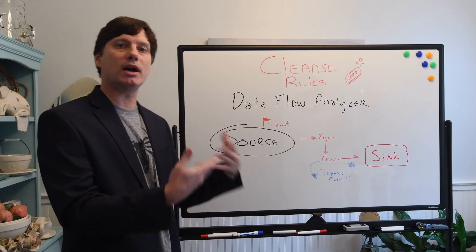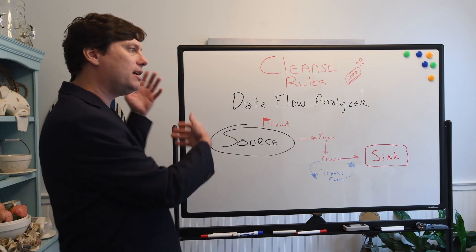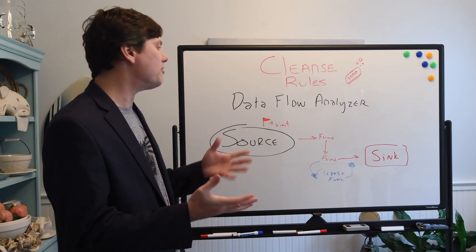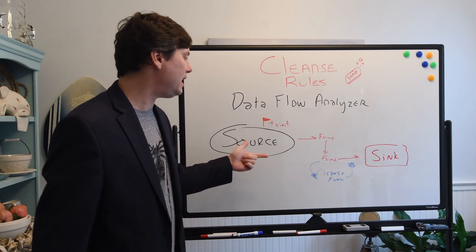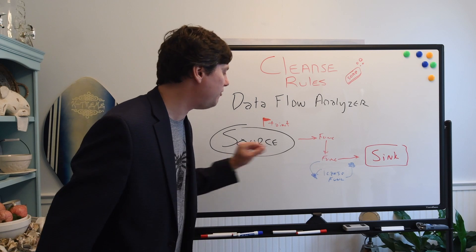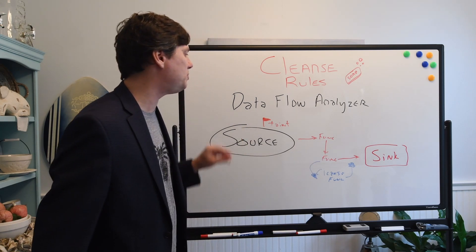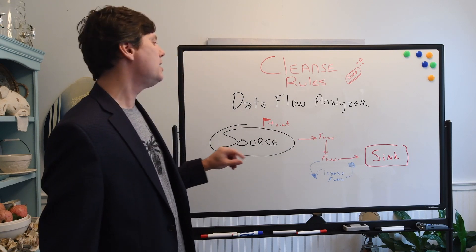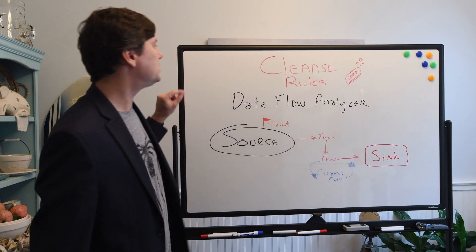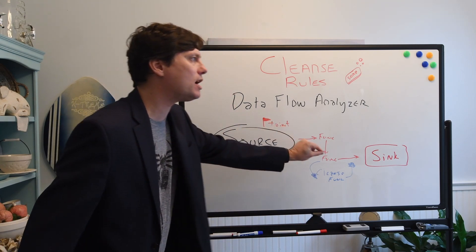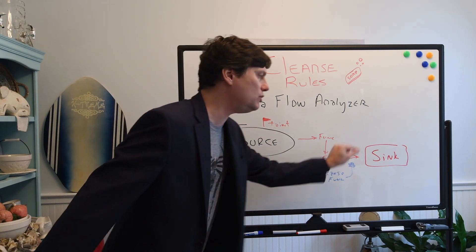So we can specifically say cross-site scripting, we have this cleanse function, fix cross-site scripting, whatever we want to call it. That cleanse function validates our data, makes it safe for cross-site scripting, removes that possibility before it reaches the sink. And so we can say with our cleanse rule, if it reaches that function and it's a cross-site scripting vulnerability, ignore it.